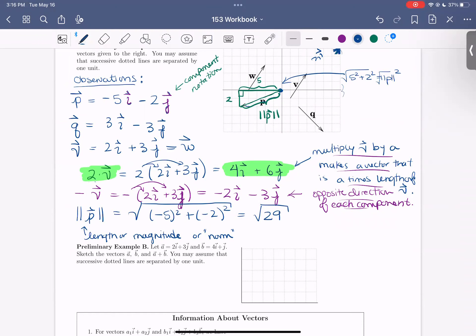So go ahead and practice computing the length or magnitude of Q. And then after you've had a chance to do that, continue the video and compare your answers. All right, so let's look at it together. So because the components of Q are 3 and 3, the length or magnitude of Q would be the square root of 3 squared plus negative 3 squared, which would be the square root of 18. Awesome.